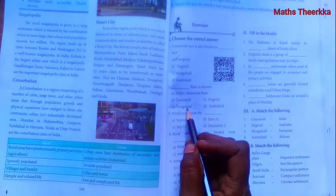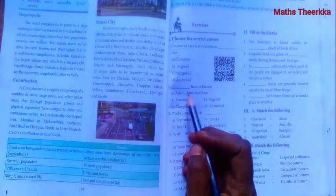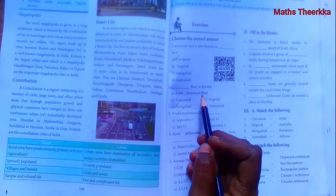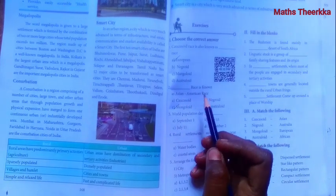Option C: Mongoloid race is known as Asian American race.